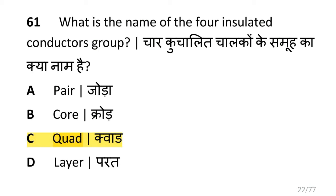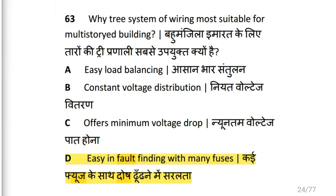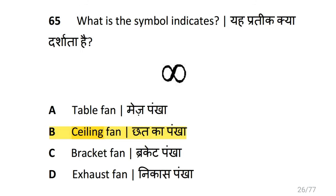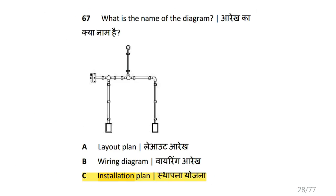How many 2-way switches are required in a godown wiring circuit to control 4 lamps? That is 3 switches. Why is the tree system of wiring most suitable for multi-storied buildings? Easy fault finding with many fuses. Which is used as a filler material for fixing a screw hole on a ceiling? That is nylon. What does this symbol indicate? That is ceiling fan. What is the name of this relay? That is dry reed relay. What is the name of this diagram? That is installation plan.